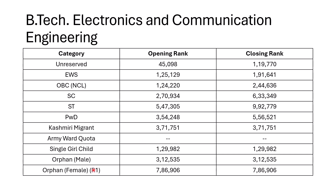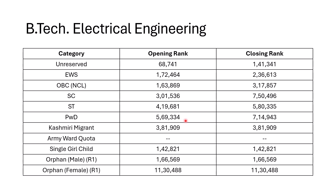Is it a bad college? Not really — the infrastructure is good. So as long as you're getting an opportunity, grab it. For Electrical: Unreserved 1.41 lakh, EWS 2.36 lakh, OBC 3.17 lakh, SC goes up to 7.5 lakh, ST 5.8 lakh. PWD 7.14 lakh, Kashmiri Migrant 3.81 lakh, Single Girl Child 1.42 lakh, Orphan Male 1.66 lakh, and Orphan Female 11 lakh 30,488.